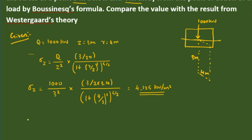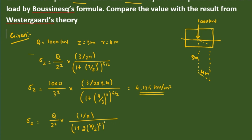Next, we find the Westergaard analysis. The formula is: sigma Z equals Q divided by Z squared, into 1 divided by π, divided by 1 plus 2 into (R by Z) whole squared, whole power 6 by 2, where π is 3.14. We can now substitute all the values.